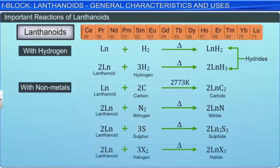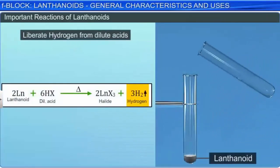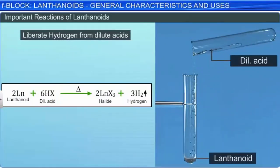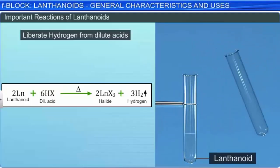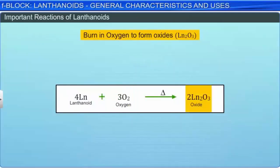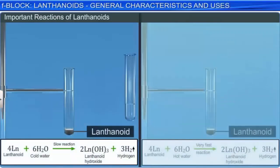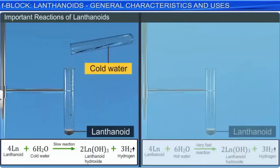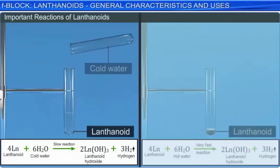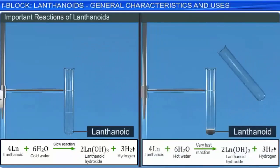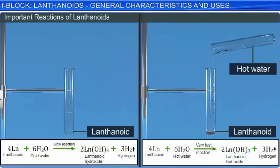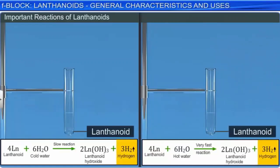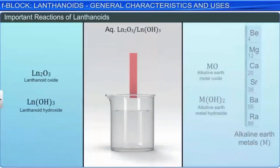They liberate hydrogen from dilute acids. They burn in oxygen to form oxides of the type Ln₂O₃. They react slowly with cold water but more rapidly with hot water and liberate hydrogen gas. The lanthanides are basic in nature, like alkaline earth metal oxides and hydroxides.